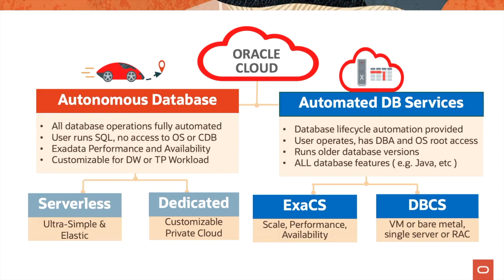The other service I'm going to talk about today is the Autonomous Database service. In this service, all database operations are fully automated. The user runs SQL with no access to the operating system or the container database. This service is built on top of the Exadata platform, so customers get Exadata performance and availability. This service can be customized for data warehouse or transaction processing workloads. We have two flavors: one is the serverless model, where usability is ultra simple and very elastic, and the second is the dedicated model, where customers can build a private cloud on Oracle Cloud Infrastructure.